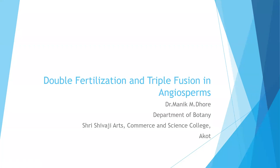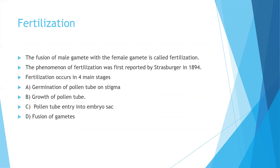Today we will discuss the topic double fertilization and triple fusion in angiosperms. Before going to discuss fertilization, let us understand the male reproductive part of the flower. The male reproductive part is the stamen and each stamen consists of three parts: filament, connective, and anther. Inside the anther there are large numbers of dusty particles and pollen grains.